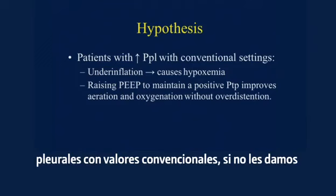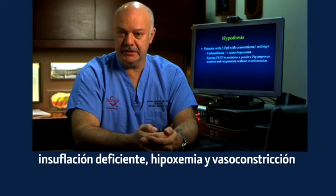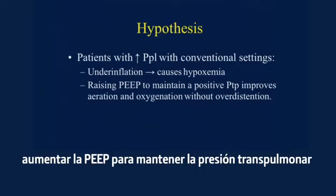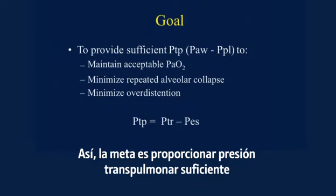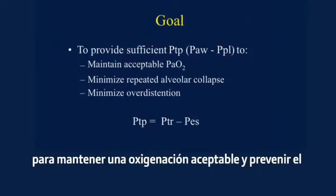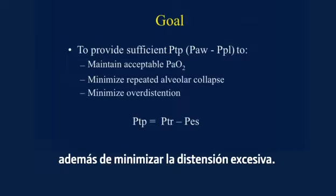The hypothesis is that patients with increased pleural pressures with conventional settings — if we don't give them enough pressure — will develop underinflation, hypoxemia, and pulmonary vasoconstriction. In these patients, we would need to raise PEEP to maintain a positive transpulmonary pressure that improves aeration and oxygenation without overdistension and without promoting atelectrauma. The goal is to provide enough transpulmonary pressure to maintain acceptable oxygenation, to prevent RACE (repetitive alveolar closing and expansion), and to minimize overdistension.